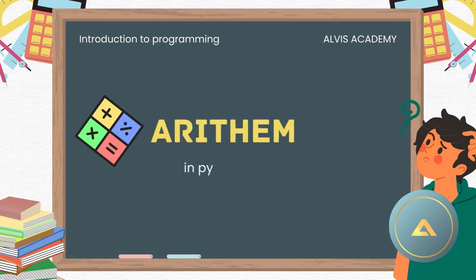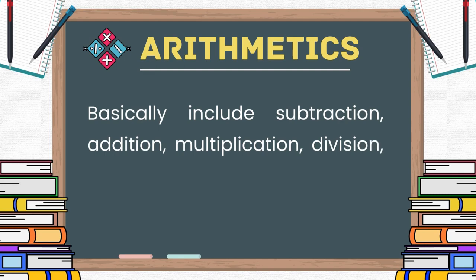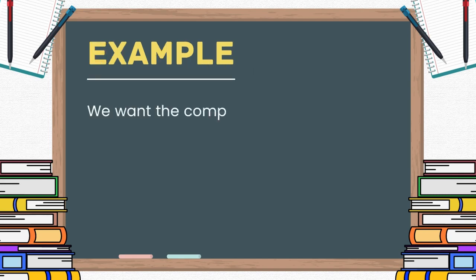In Python programming, we are able to do arithmetic operations. Arithmetic operations include things like addition, subtraction, multiplication, and division. For example, we want the computer to add two to one and then it will print the result.